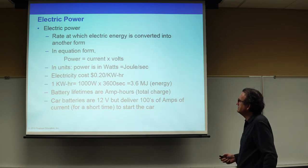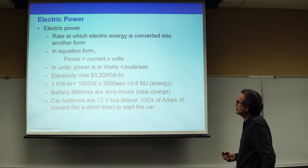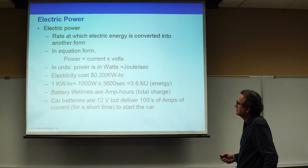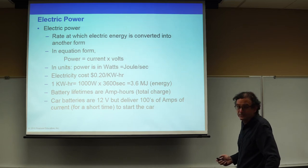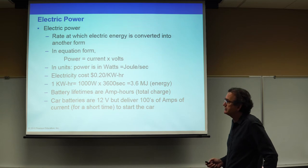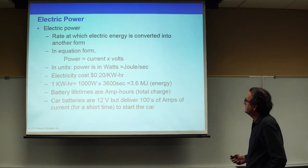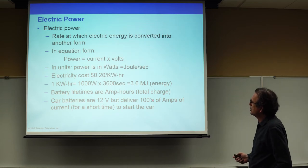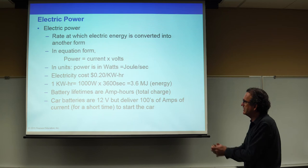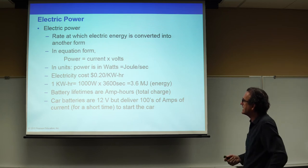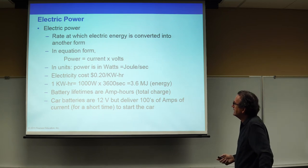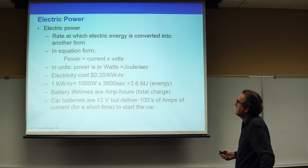Battery lifetimes are given in terms of amp-hours, which is total charge. Charge per second — or current, or coulombs per second — times the number of seconds, where an hour is 3,600 seconds, gives the total charge that the battery is capable of delivering before it dies and stops generating any more power.